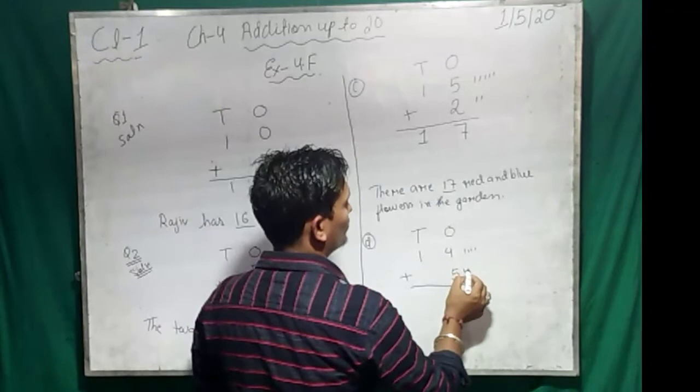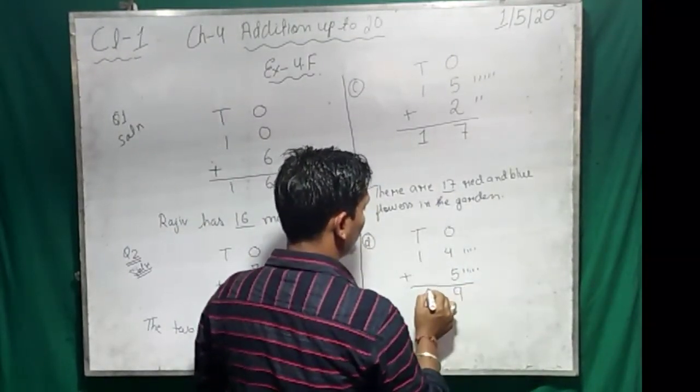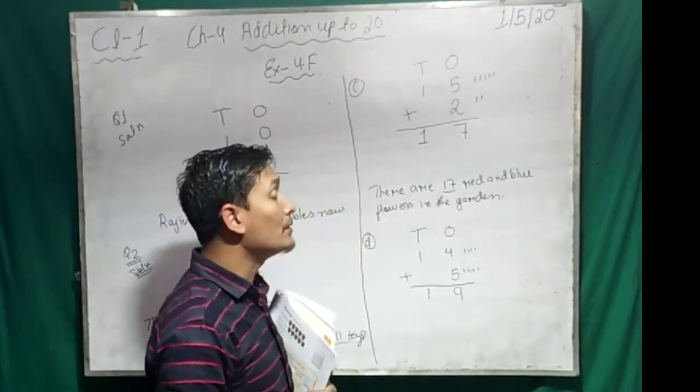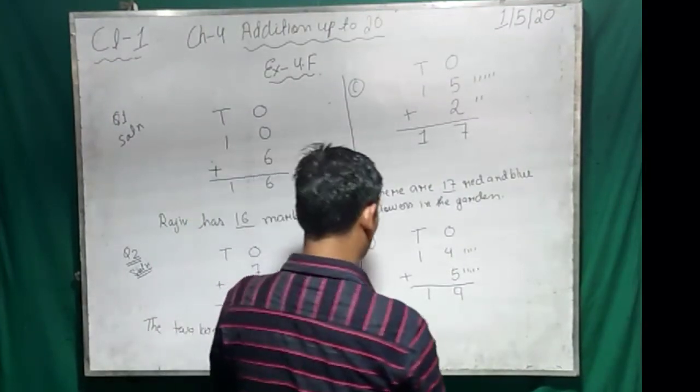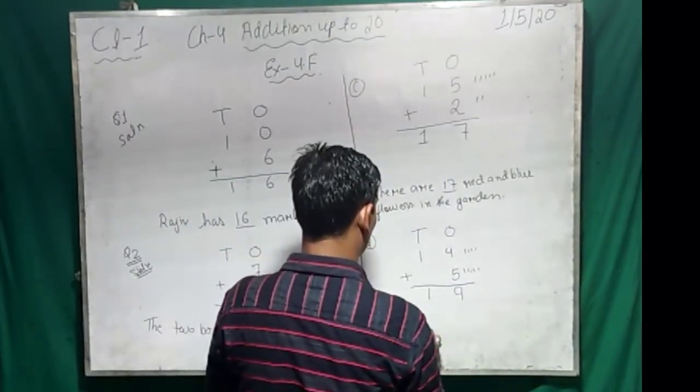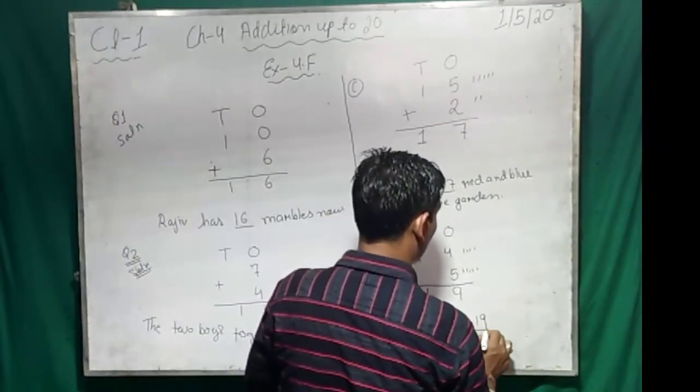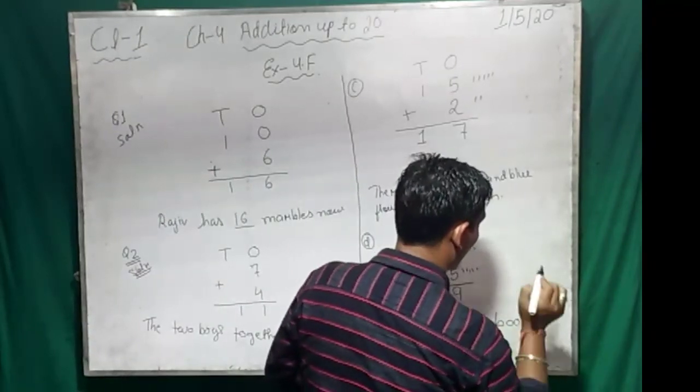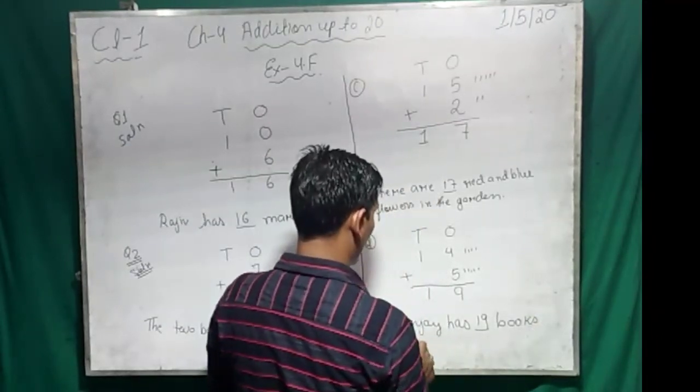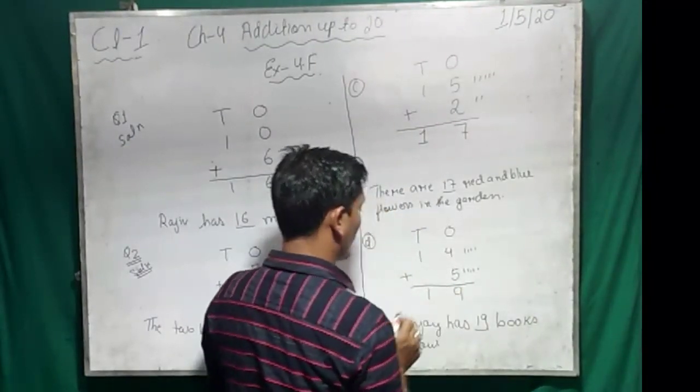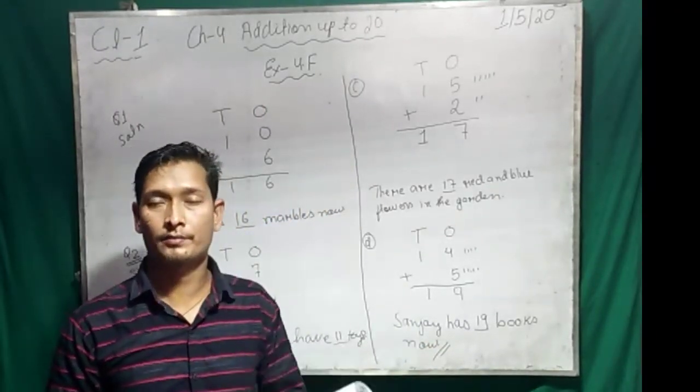So four. One, two, three, four. One, two, three, four, five. Now count it together. Nine. Then this one will come here. So total how many books? Now Sanjay has 19 books. Now Sanjay has 19 books. Now clear student? Done. Good. Keep on reading. Thank you.